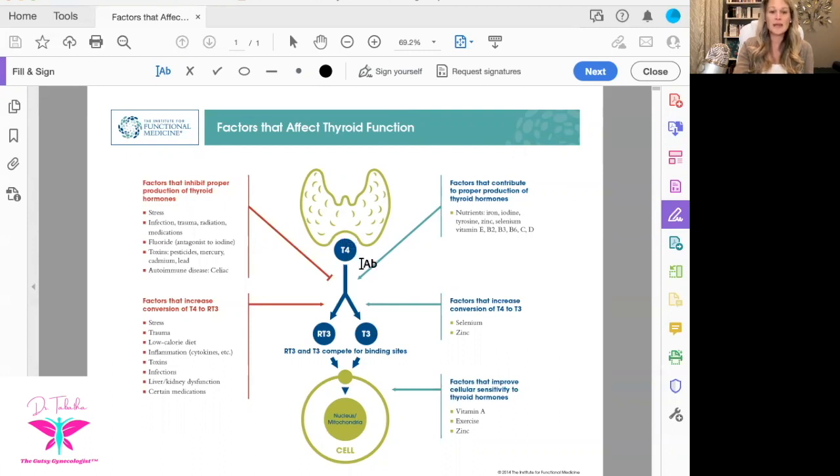Things that inhibit thyroid hormone production are chronic stress or cortisol production, infections, trauma, radiation, medicines, fluoride. Like I mentioned, all those halogens, toxins like pesticides in your food, mercury, cadmium, lead, autoimmune processes. So not just an attack directly on your thyroid, but an autoimmune attack anywhere in your body can prevent your thyroid from making thyroid hormones.